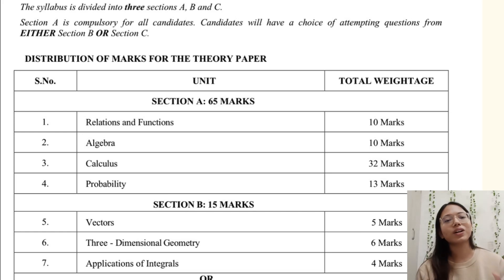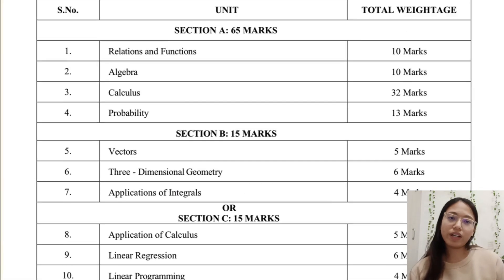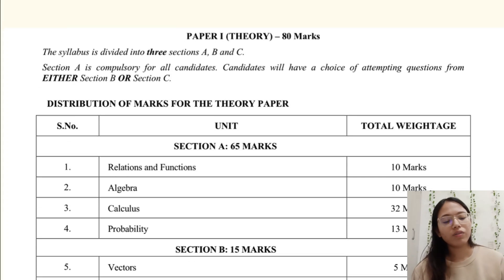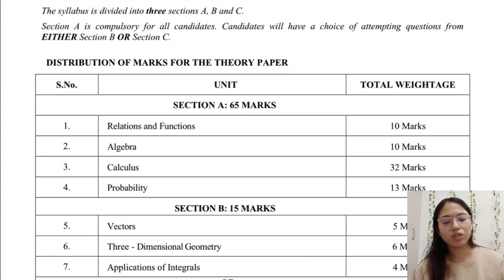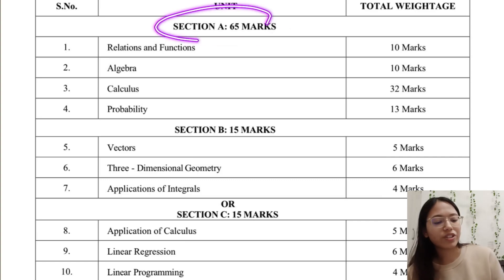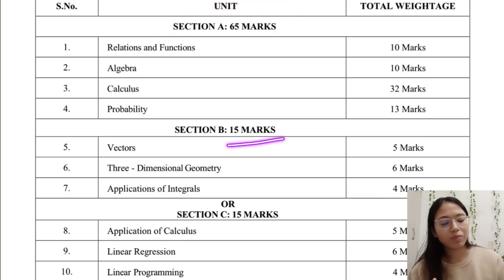Your theory will be of 80 marks and 20 marks is your project work. When I was in 12th grade there was no such project work, we had this 100 marks paper. So it was lengthy. I remember when I gave my boards I was panicking because only a few minutes were left, but thankfully I did all the questions. Section A is of 65 marks, Section B 15 marks. You can go for Section C. I'll tell you what to choose.